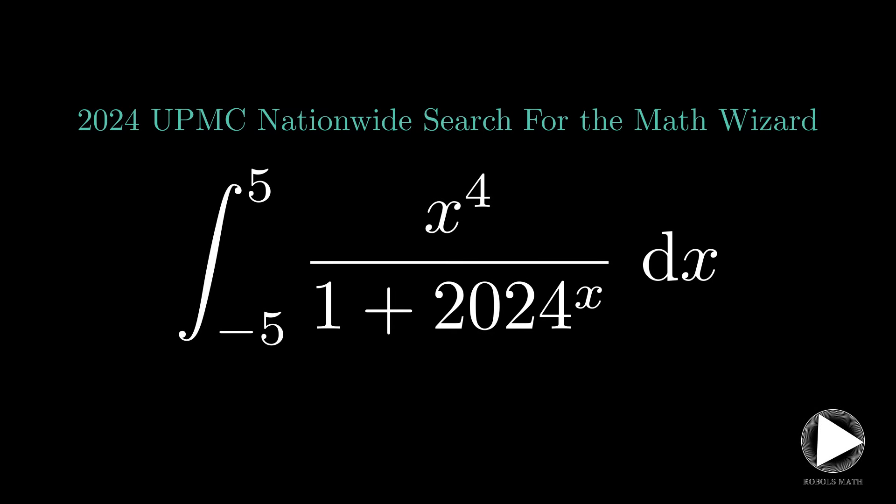Find the integral of x to the 4th over 1 plus 2024 to the x from x equals negative 5 to 5.